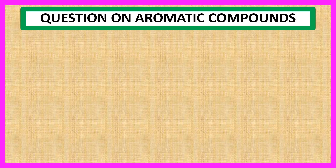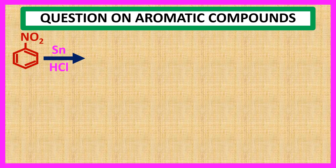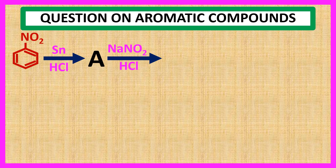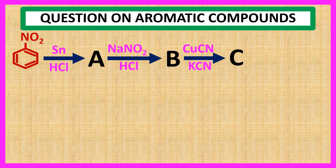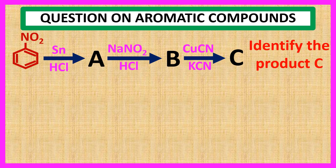Welcome everyone. Question on aromatic compounds. When nitrobenzene is treated with Sn and HCl, product A is formed. Reaction of product A with NaNO2 and HCl forms product B. Reaction of product B with CuCN and KCN forms product C. Identify product C. Choices are: 1.